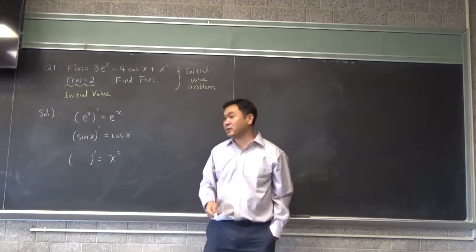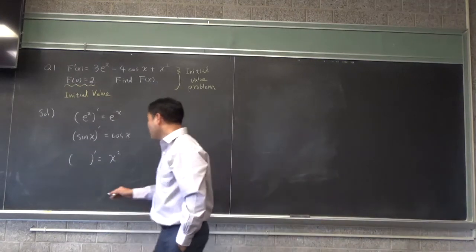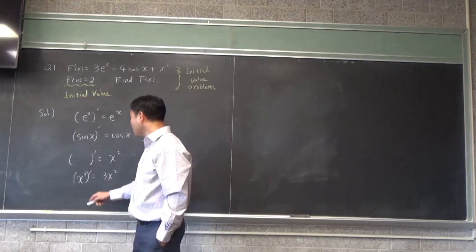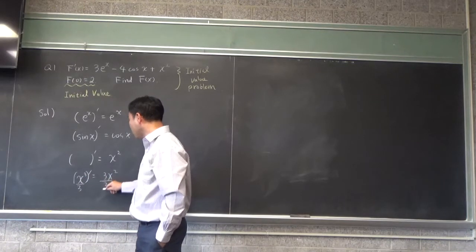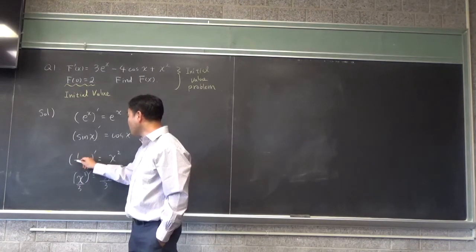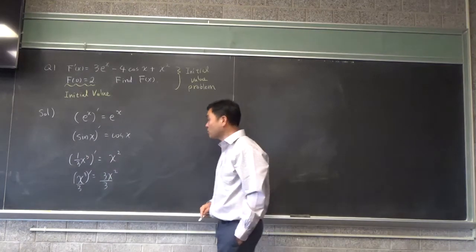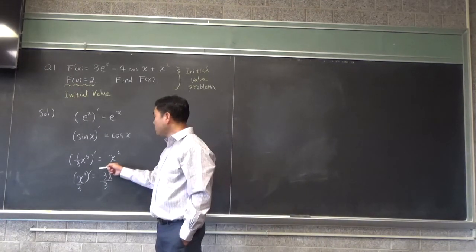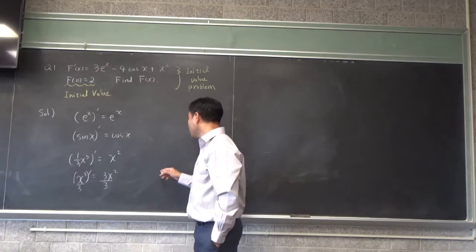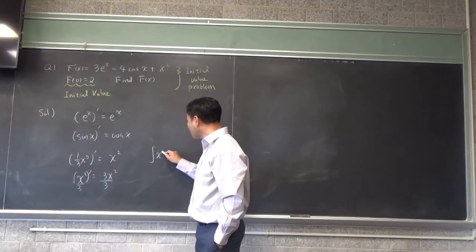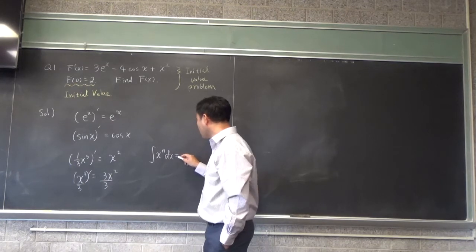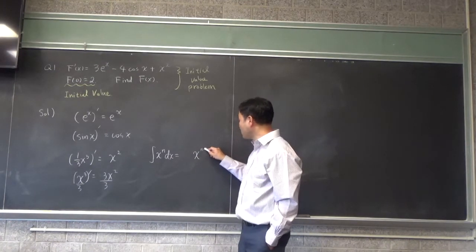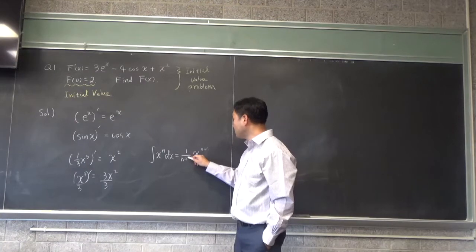Now x squared is a bit more tricky. You can start by saying x cubed prime equals 3x squared, and then divide both sides by 3, and that says one-third of x cubed should give you x squared. Another way to get this is by using the power rule. The power rule formula goes like this: the antiderivative of x to the nth power is you add one to the exponent and you put the reciprocal in front, plus c.